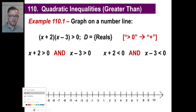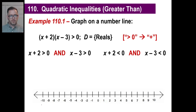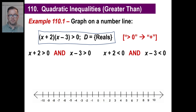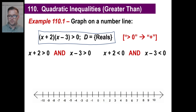You're going to graph this on a number line, so grab a piece of paper and draw it. So we have x plus 2 times x minus 3 is greater than zero, and you're allowed to use real numbers, which is all the numbers, not just integers. Greater than zero is the same thing as saying positive.